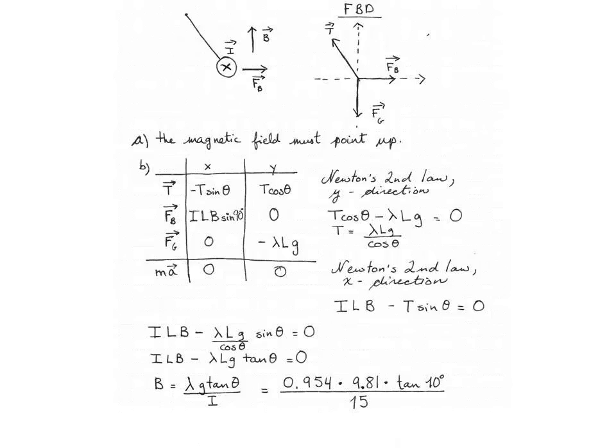Now you'll notice that there was the length of the rod in the two terms in the line above. And so when we divided lambda Lg tan theta by I times L, the two Ls cancelled. And so now when we plug in the numbers,